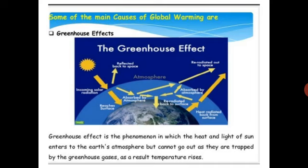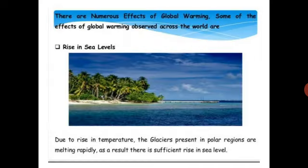You can see that rays come from the sun but cannot go back into the atmosphere. There are numerous effects of global warming on our lives. One effect observed worldwide is the rise in sea levels: due to rising temperatures, glaciers in polar regions are melting rapidly, causing a significant rise in sea levels.